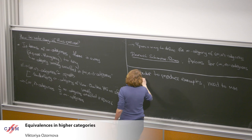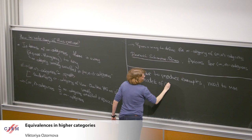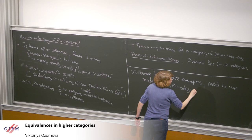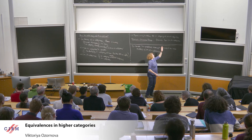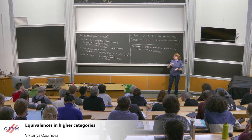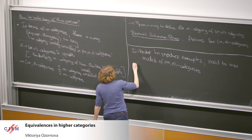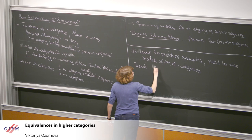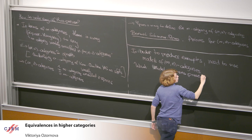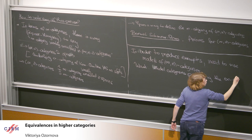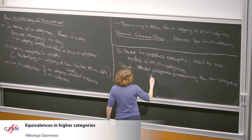We need to use models of infinity-n categories. Specifically, I would like to have a model category that presents this infinity category. For many purposes it's really convenient to have convenient model categories of infinity-n categories.